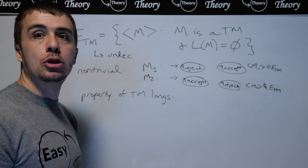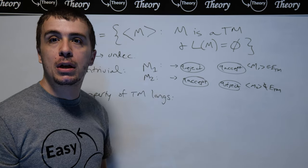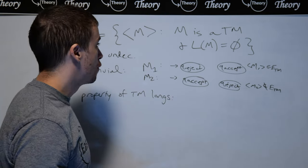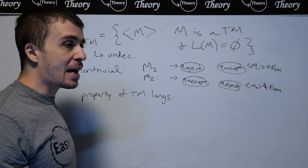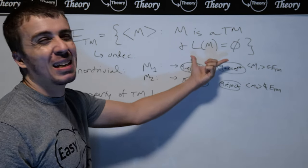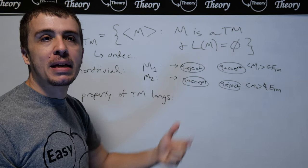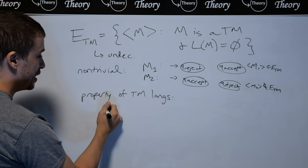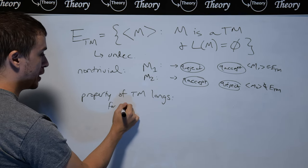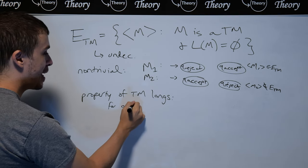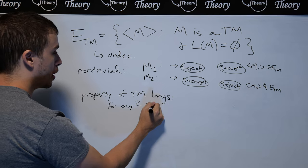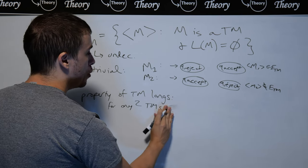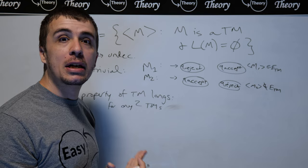How do we show this is a property of Turing machine languages? That means it's not based on the description itself — it's only based on the language. For any two Turing machines with identically the same language, it looks like that must be the case, but we need to be sure.